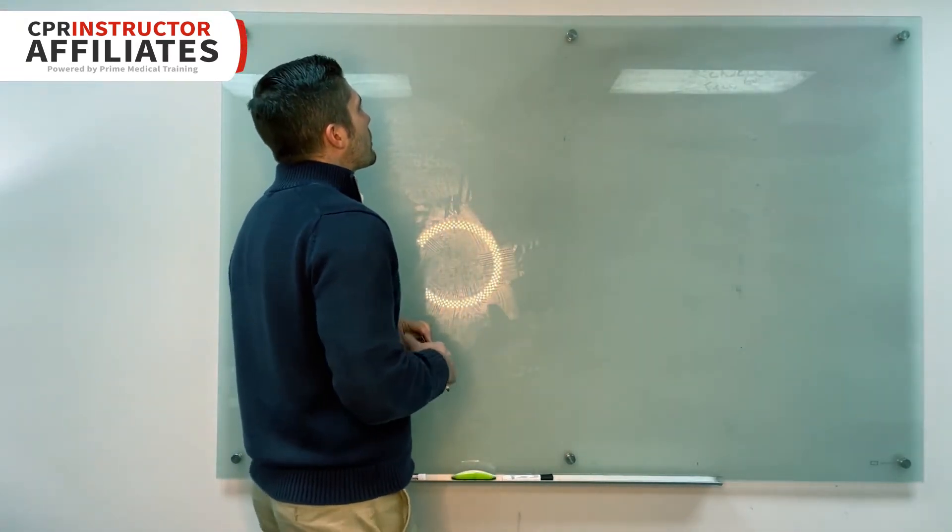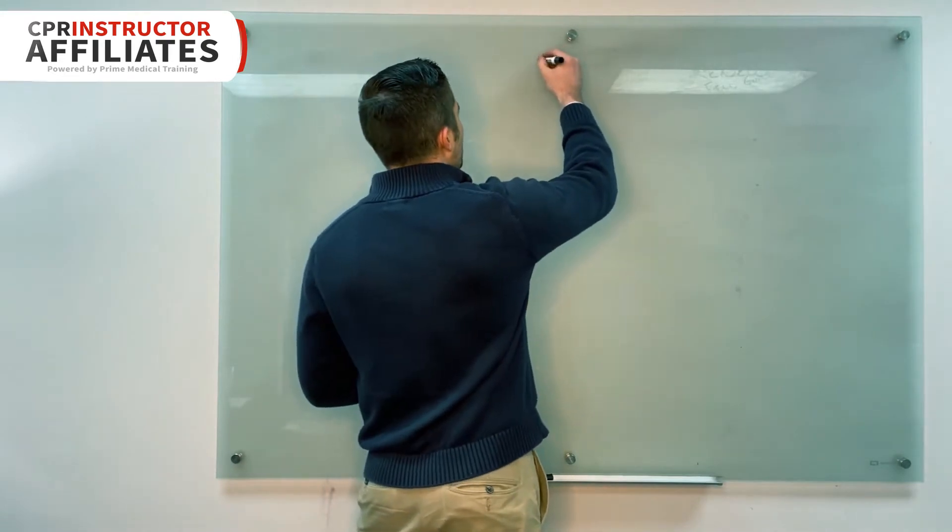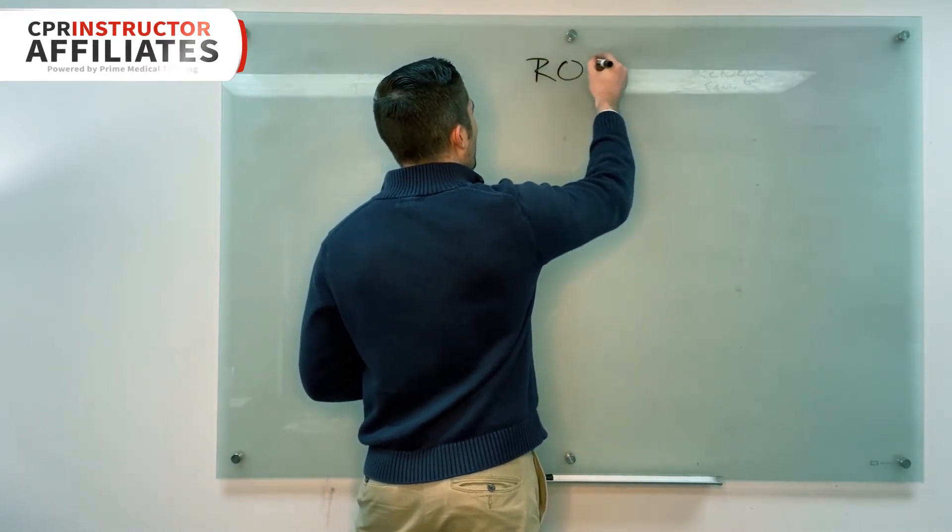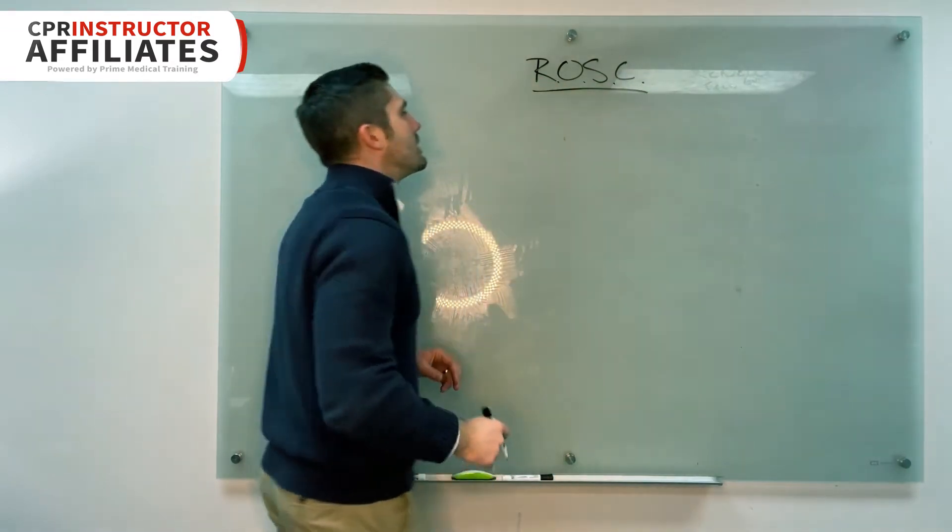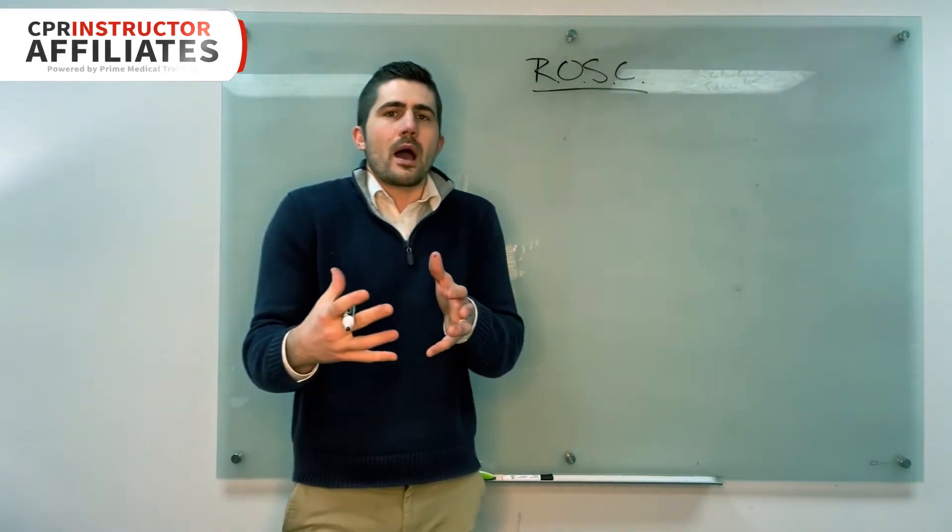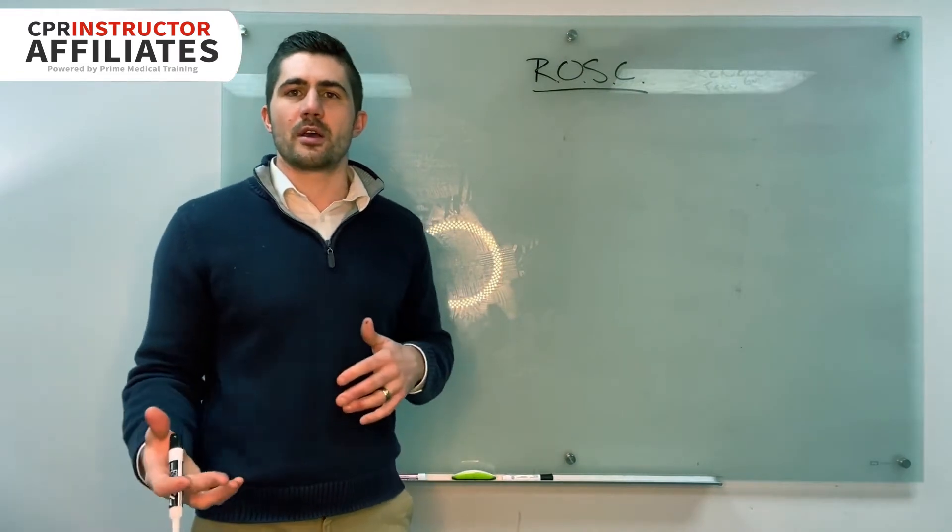And so what we'll do is we start by writing the name of the algorithm on the board, ROSC, Return of Spontaneous Circulation. And then I'll ask, how do we know if somebody's in ROSC?